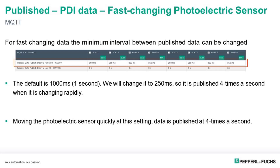We will now go into the fast changing photo eye. For fast changing data, the minimum interval between published data can be changed. The default is 1000 milliseconds, or 1 second. We will change it to 250 milliseconds so it is published at 4 times a second when it is changing rapidly. Moving the photo eye quickly at this setting will make the data publish at 4 times a second.